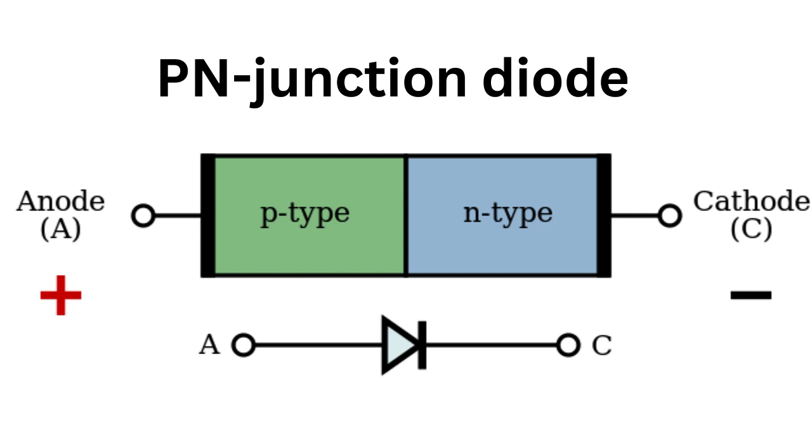When the P-type and N-type layers are brought into contact, electrons from the N-type layer flow into the holes in the P-type layer, creating a depletion region where there are no free electrons or holes. This depletion region acts as a barrier that prevents current from flowing in the reverse direction.